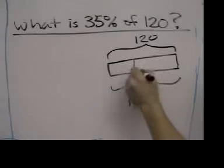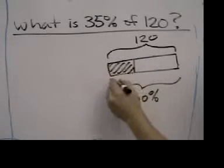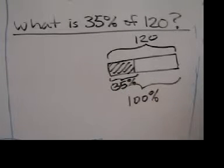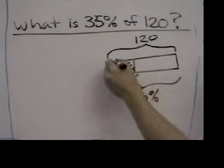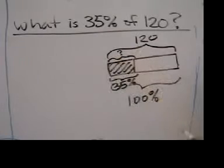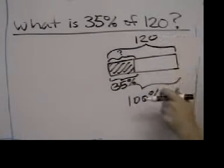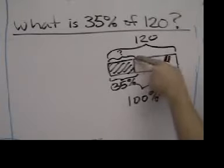And we'd like to know what is 35%. So 35% goes about here, and that's 35%. We're just estimating. And we don't know the value of 35%. We know that 100% is 120, but we don't know what 35% is equal to.